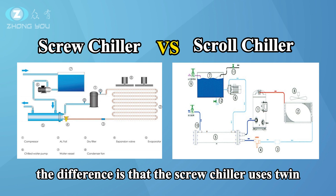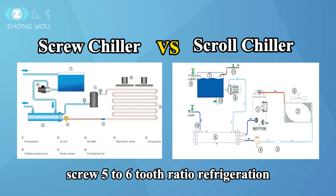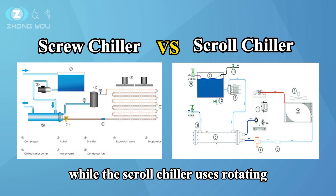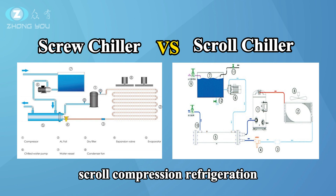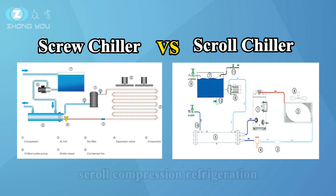The difference is that the screw chiller uses twin screw 5 to 6 tooth ratio refrigeration, while the scroll chiller uses rotating scroll compression refrigeration.